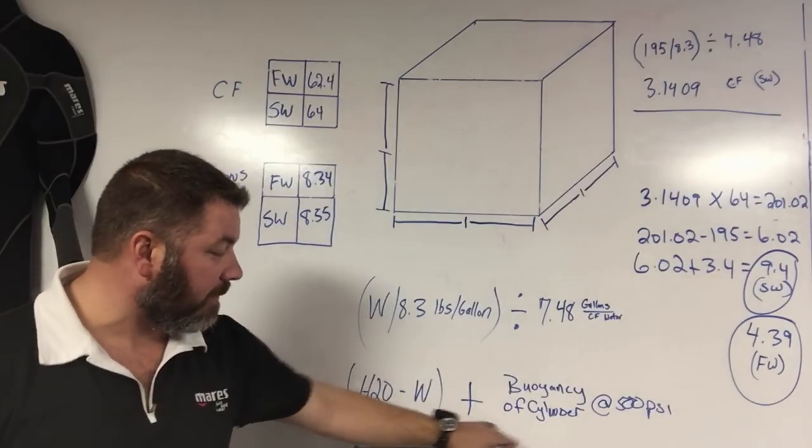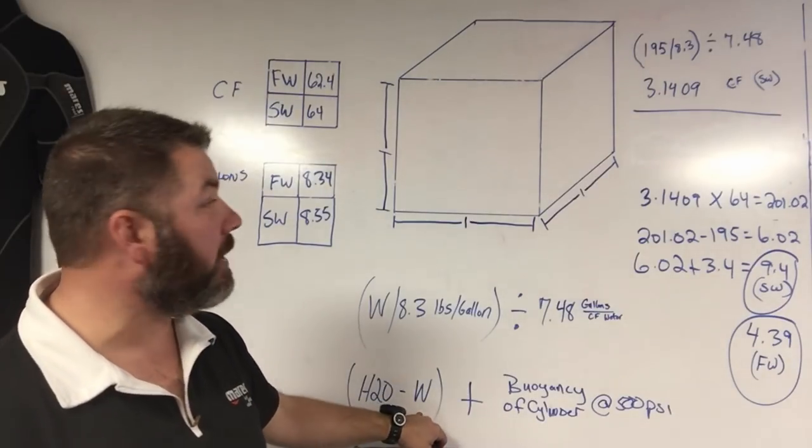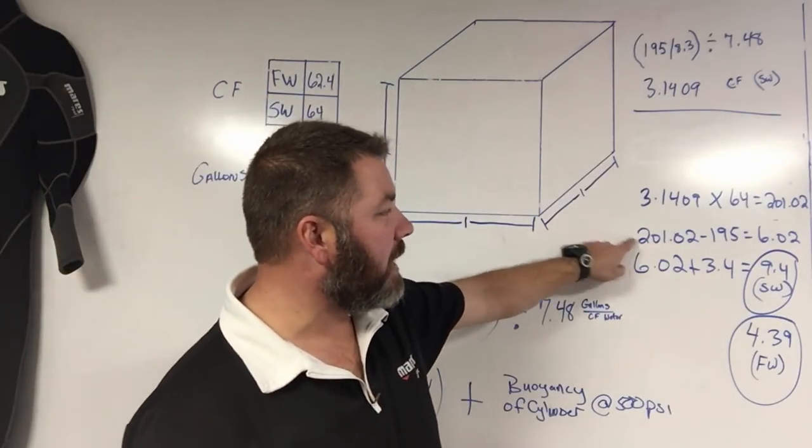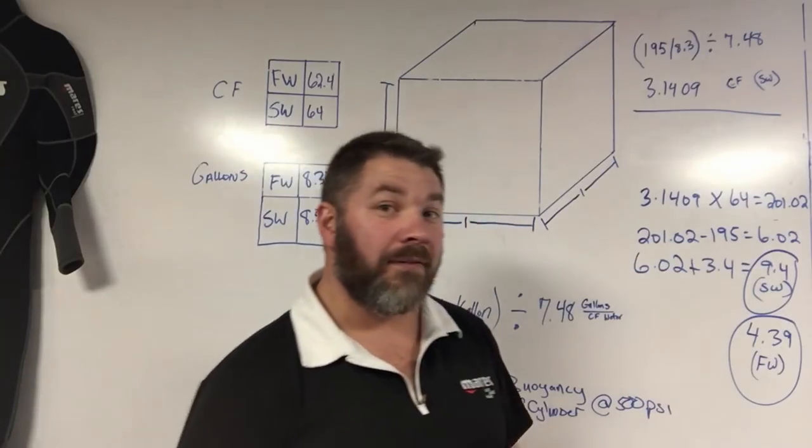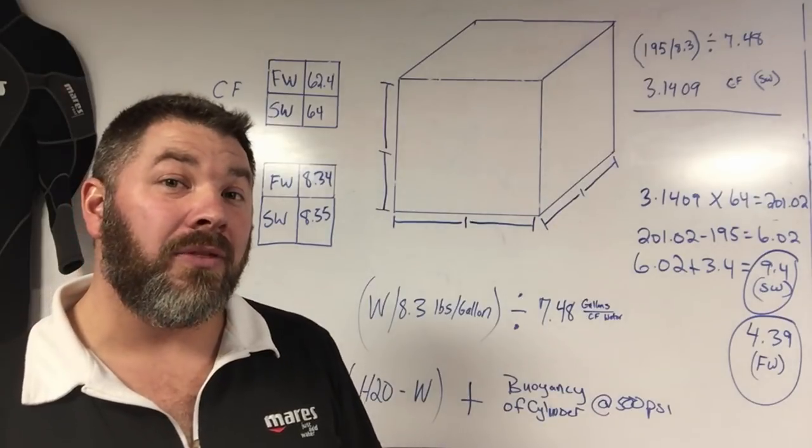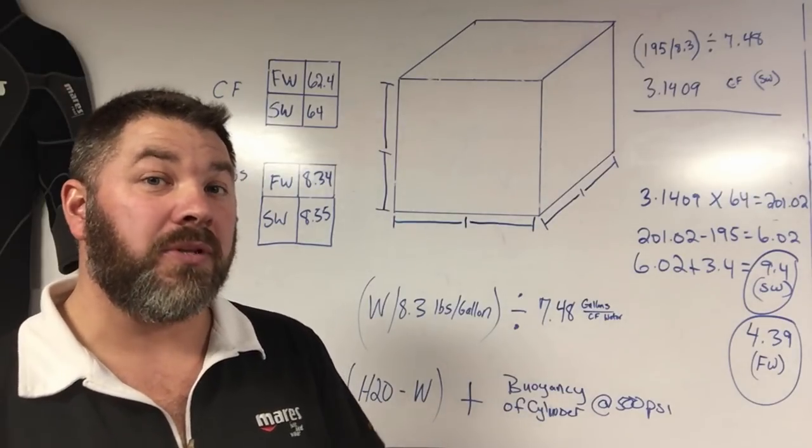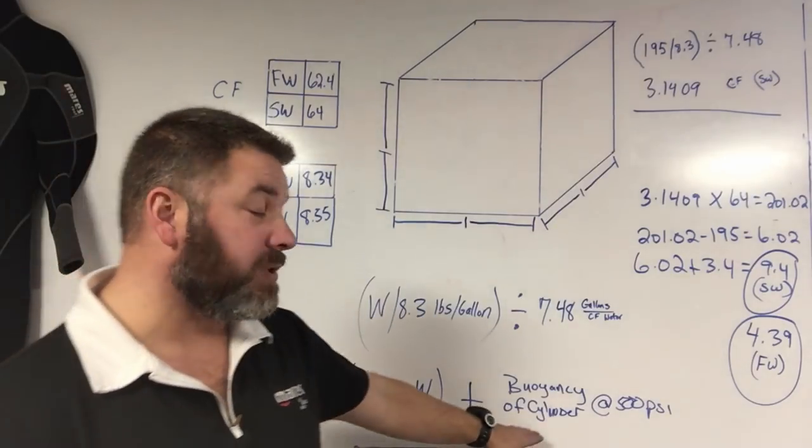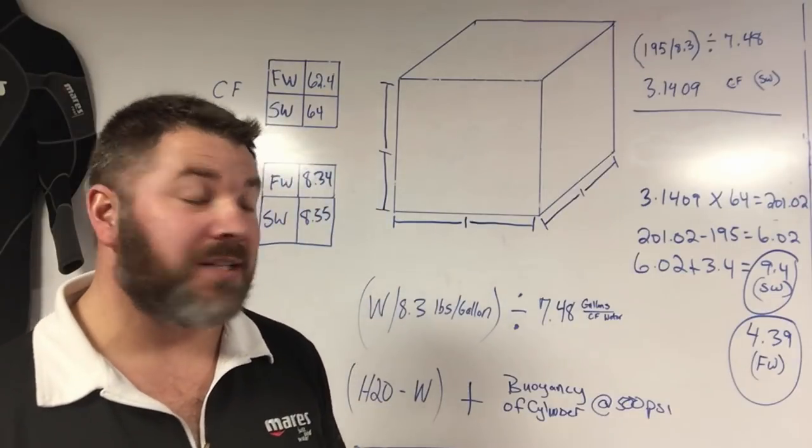All I've got to do according to the second formula is minus my body weight from that. So if I minus 195, I get 6.02 pounds. And then I'm going to add in the buoyancy weight, or the positive buoyancy weight of that cylinder, which once again is aluminum 80 that's pressurized at 500 psi.